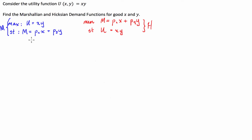We're trying to maximise our benefit from consuming X and Y — given the amount of money we have, we've got to find what combination of X and Y maximises our happiness. In the Hicksian case, we have some fixed level of utility we're trying to reach and we have to minimise the cost of getting there. These are two ways of approaching basically the same problem, and the way we're going to find these is using the method of Lagrange.